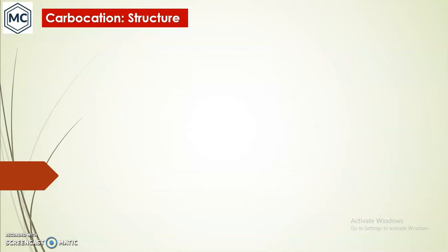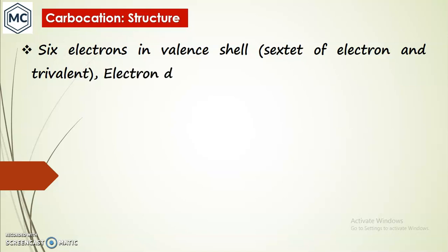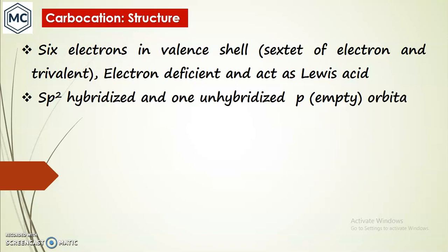What is the structure of a Carbocation? A Carbocation has only six electrons in its valence shell. It is short of two electrons to complete the octet, so it is electron deficient. Hence it acts as a Lewis Acid, consistent with the Lewis Acid concept.